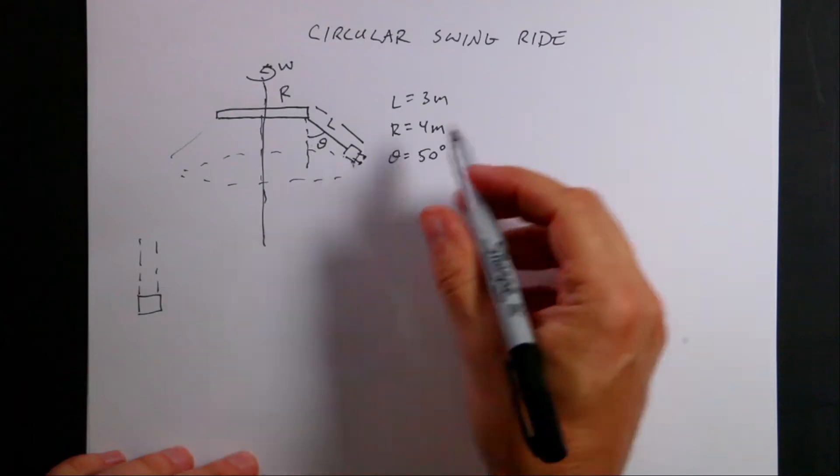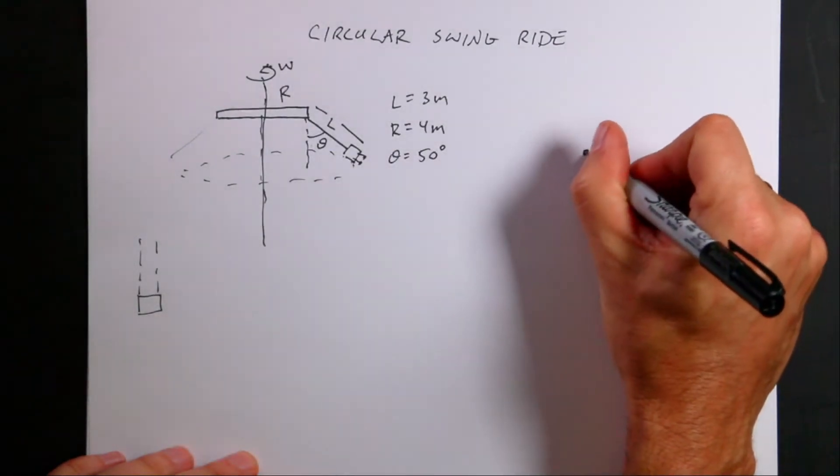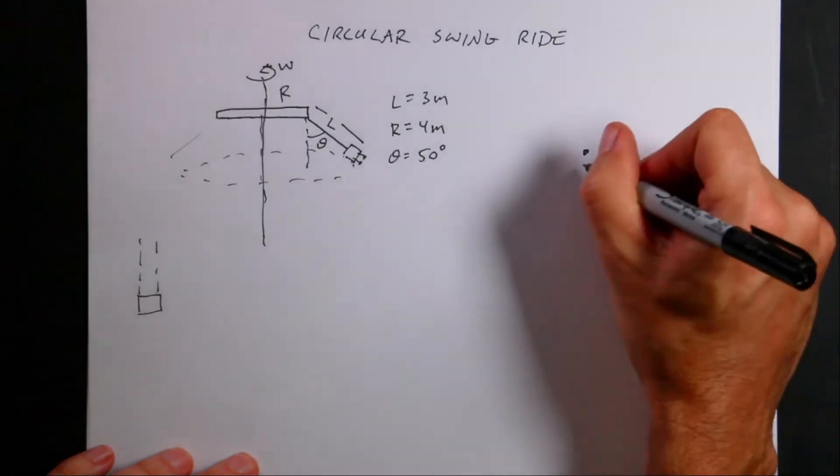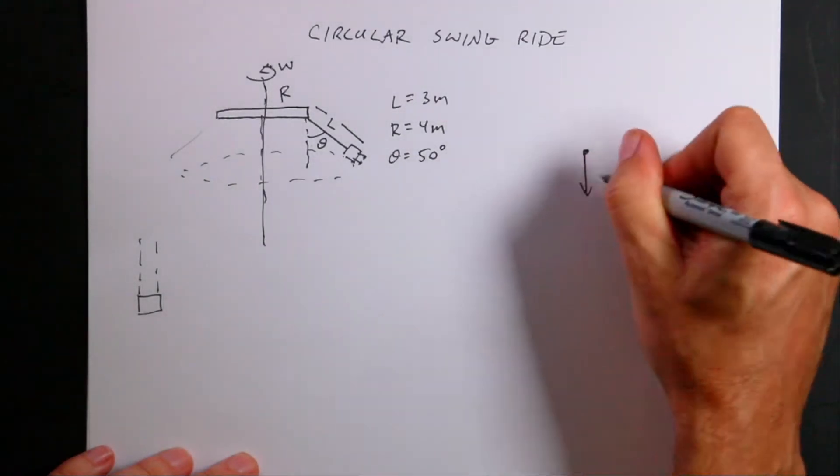Let's start with a force diagram. Here's the person. What forces are acting on that person? There's only two. There's the downward gravitational force, mg.